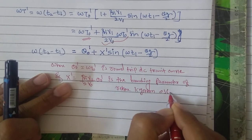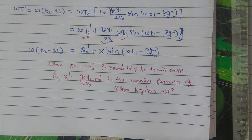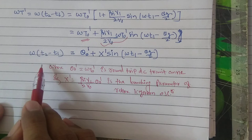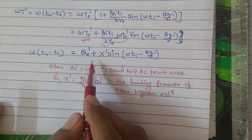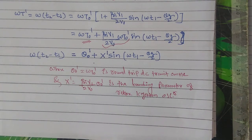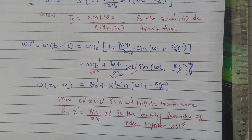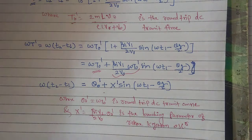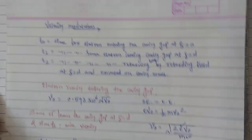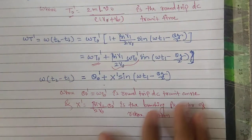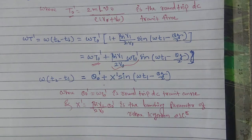Comparing the expressions for DC transit angle for the two-cavity klystron and the reflex klystron, we find there is a difference of sign — the bunching parameter is negative. Also, when we derive the current in our upcoming video, since electrons are coming back they will be traveling in the negative z direction. So what we have done in this video is obtained the expression for the bunching parameter x' of the reflex klystron oscillator and understood the process of velocity modulation in the reflex klystron oscillator. Remember this bunching parameter and its sign in the case of the reflex klystron oscillator. Thank you.